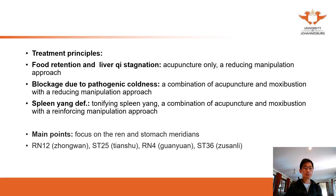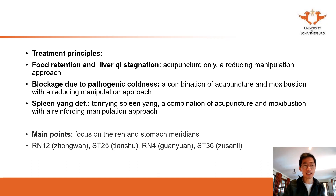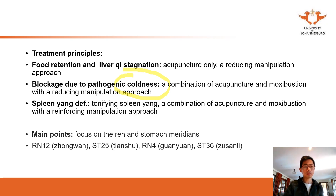When we come to the treatment principles, treatment will be based on syndrome differentiation. For food retention and liver qi stagnation, these are excess syndromes, so we use reducing technique in acupuncture. For blockage due to coldness, we can use acupuncture with moxibustion, because for coldness we use warmth. For spleen yang deficiency, we combine moxibustion and reinforcing technique. The basic points to select are Ren 12, Stomach 25, Ren 4, and Stomach 36 — these are the most common basic points. Ren 12 is the meeting point of the fu organs.